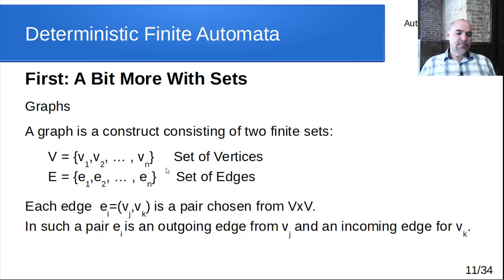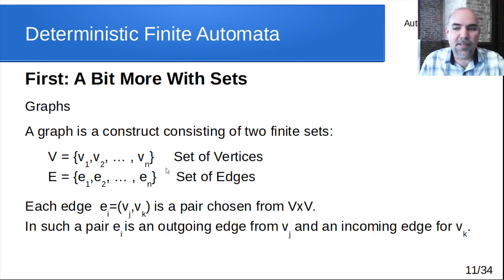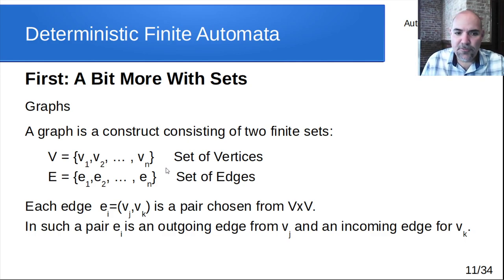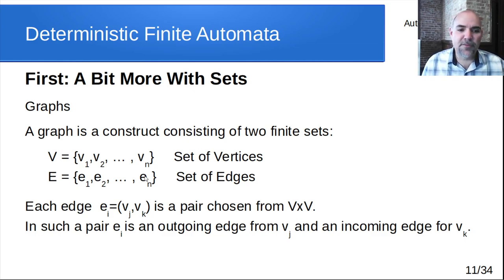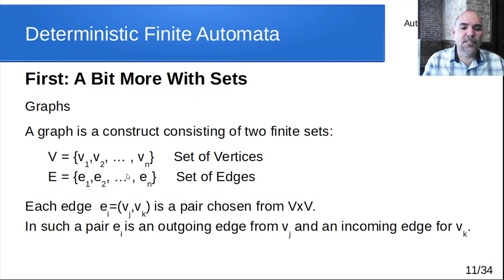Now let's talk about graphs, and then we'll dig into DFAs. A graph is a construct that consists of two finite sets — and notice that 'finite' is important. You cannot have an infinite-sized graph. The graph must have a finite number of vertices and a finite number of edges. We'll use V for vertices and E for edges.